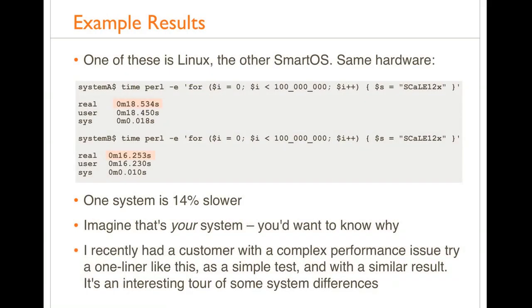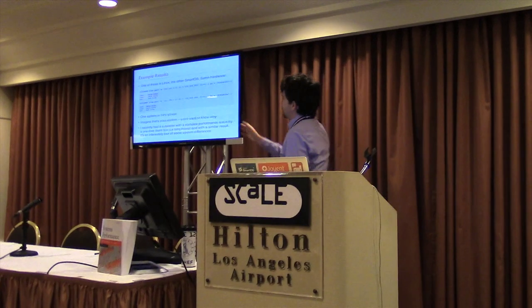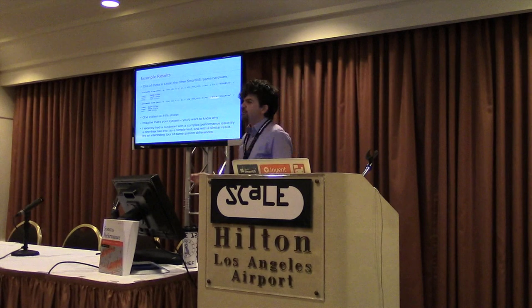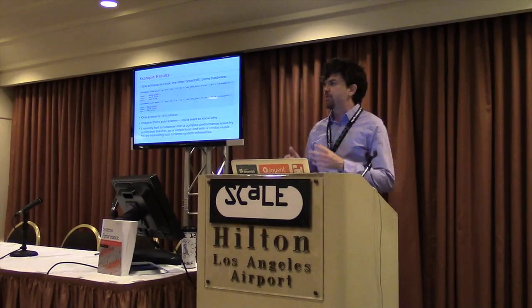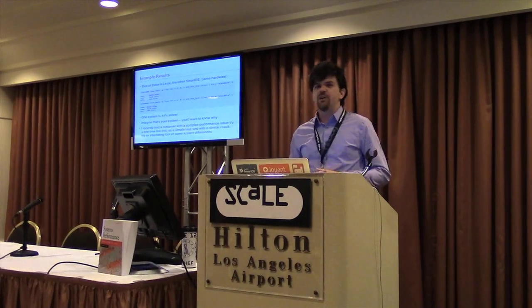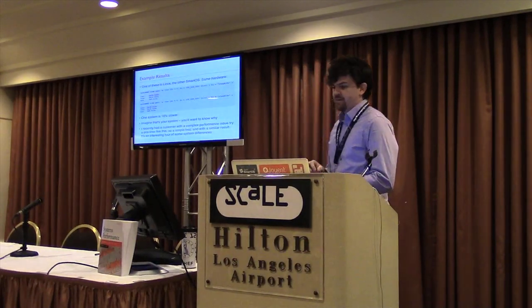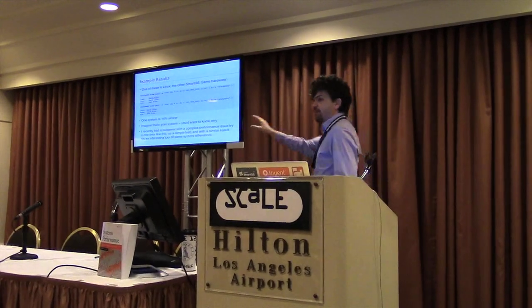One of these is Linux and the other is SmartOS, running on the same hardware, and there's a 14% difference even though this one-liner looks pretty simple. Imagine your system was the slower one — 14%, 20%, 30% slower — you kind of want to know why. This actually came up recently when I had a customer working on a performance issue involving TCP and a distributed application.